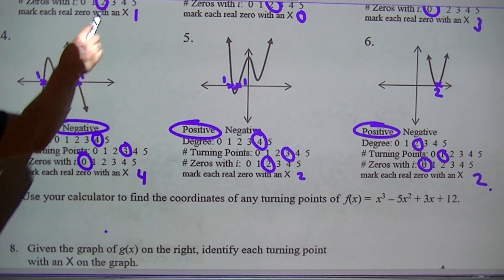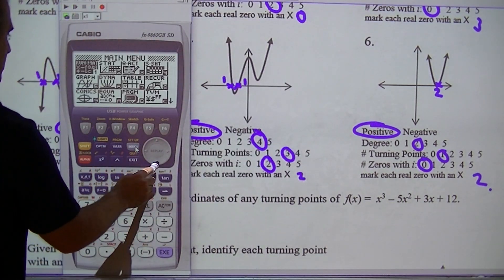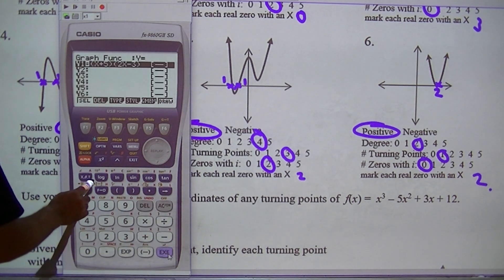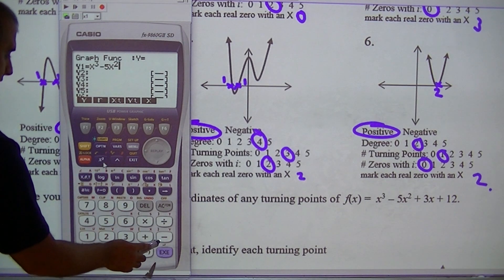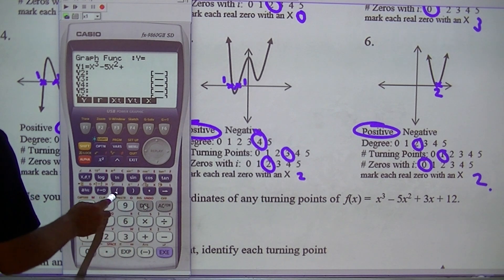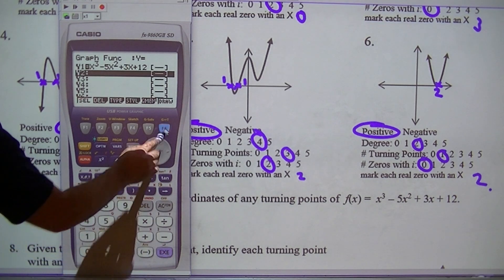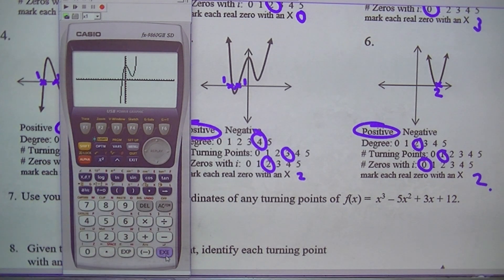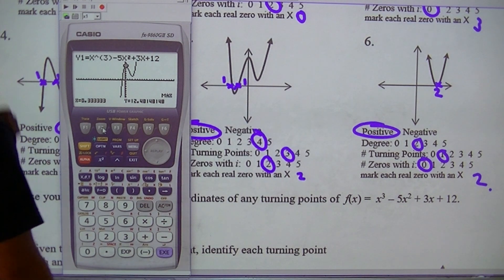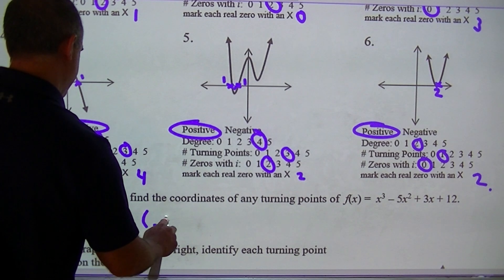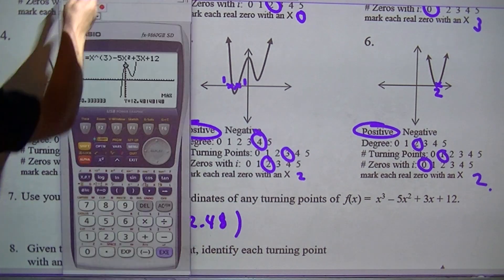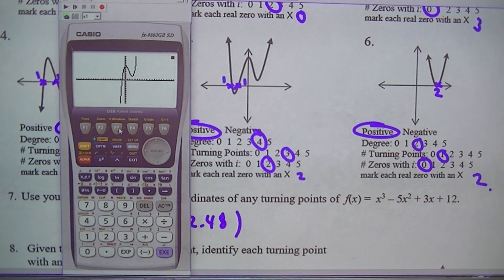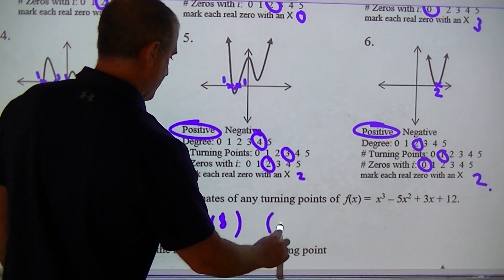Find the coordinates of the turn points in your calculator — this is very easy. Go to graph and type in x cubed minus 5x squared plus 3x plus 12, then draw it. Zoom out a little bit. G-solve max: one of the maxes is (0.3, 12.48). G-solve minimum: the minimum is (0.3, 3). So those are the turn points.